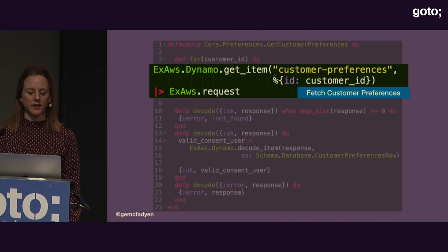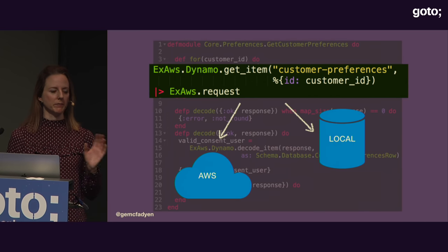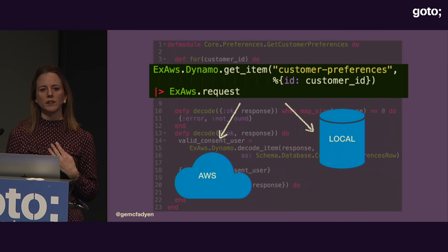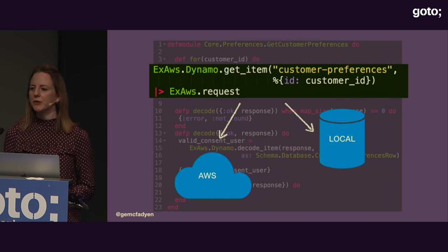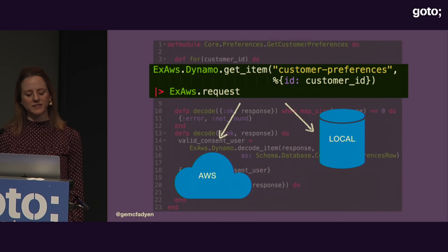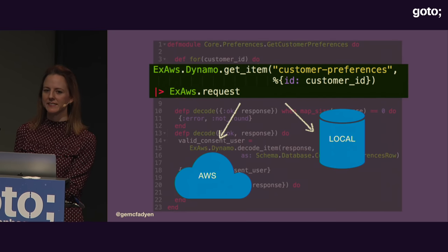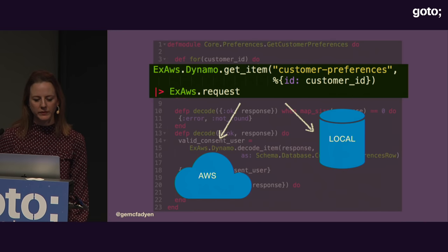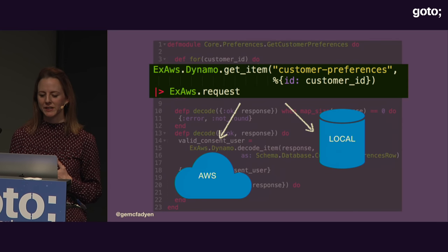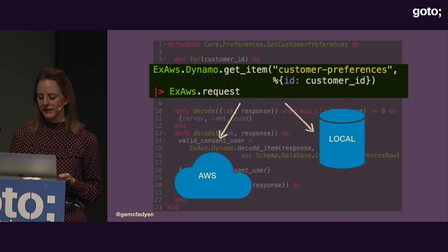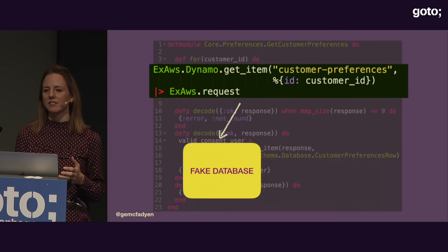When running unit tests, I don't actually want to connect to a real AWS instance, nor do I want to orchestrate bringing up a local instance of Dynamo, creating a table, populating data, and then tearing it all down after my unit test. So in terms of Dependency Inversion, I don't want my high-level module — the get customer preferences module — to depend on the details of this library. Instead, I want to separate those layers and give myself the ability to plug in a fake database, so when running unit tests I don't have to connect to any running database at all.